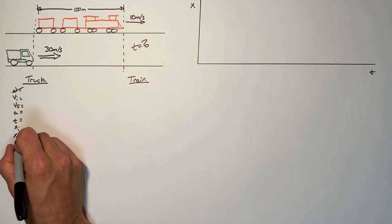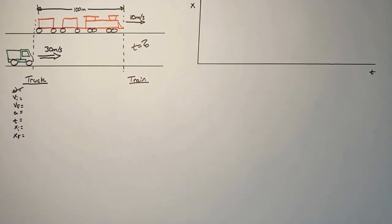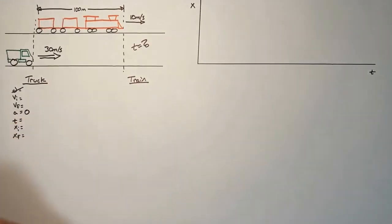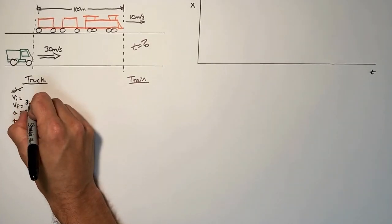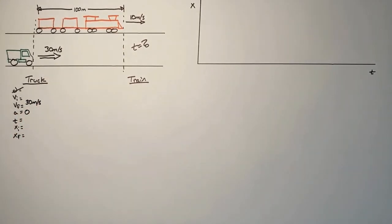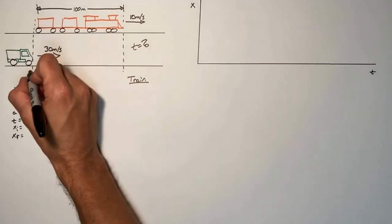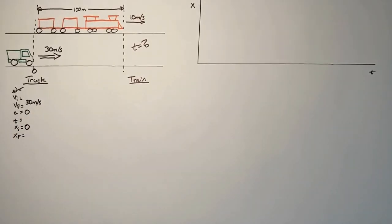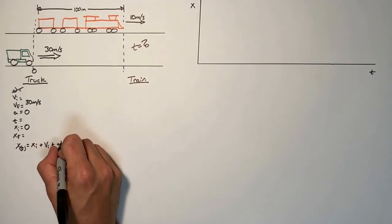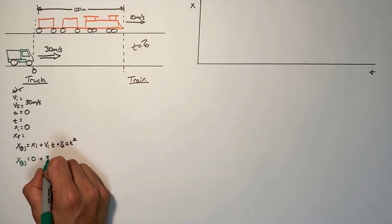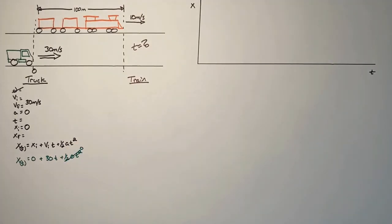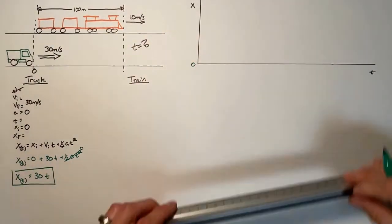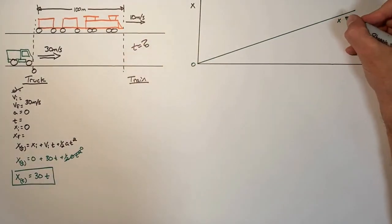Rather than looking at displacement for the truck, we're going to look at the initial and final positions. Because the truck is traveling at a constant velocity, acceleration is zero and velocity is always 30 meters per second. We say the truck starts at a position of zero. Using the position versus time function, we generate a function for the position of the truck: 30t. Graphed, this is a diagonal line with a slope of 30.